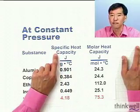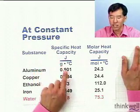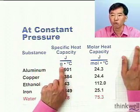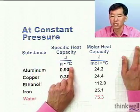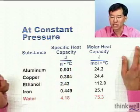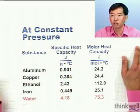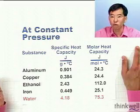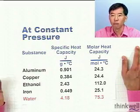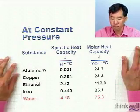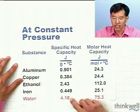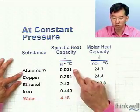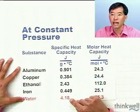We're going to define two quantities. The first is the specific heat capacity, which has units of joules per gram degree Celsius. It represents how much energy, in joules, you have to put in to heat one gram of a pure substance by one degree Celsius. You can see values here for aluminum, copper, ethanol, iron, and water.